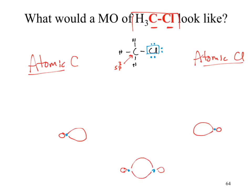Can we add more information to this drawing? We do see clear nodes on either side. We also know something about the carbon and chlorine from electronegativity — chlorine should be carrying most of the electron density. So we need to shift the electron density in our drawing to be more representative of that, with electron density shifted more towards the chlorine. What we now have is our bonding molecular orbital.